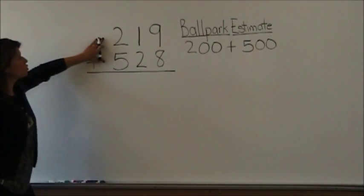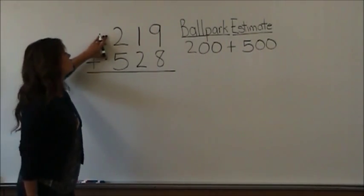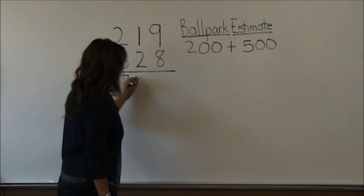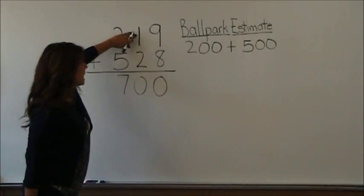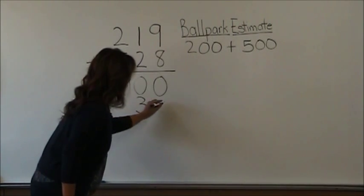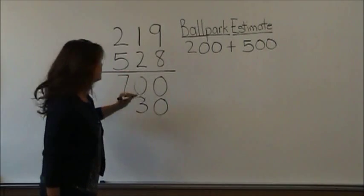Now let's go back and do our partial sums method. We start in the hundreds column. Two hundred plus five hundred is seven hundred. Ten plus twenty is thirty. Nine plus eight is seventeen.